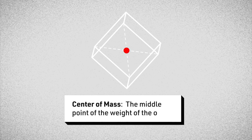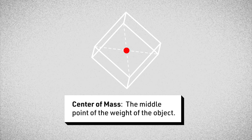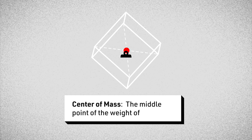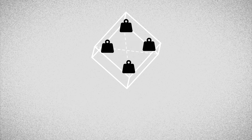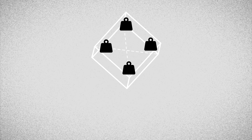The center of mass of an object is basically the middle point of the weight of the object, which we can identify by considering how an object's mass is distributed.